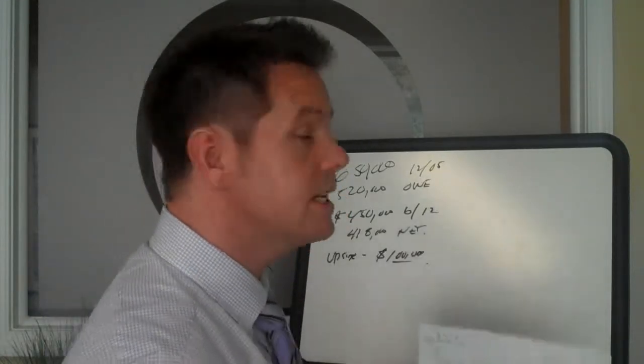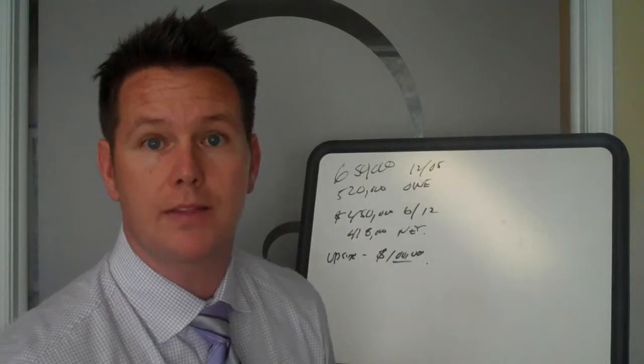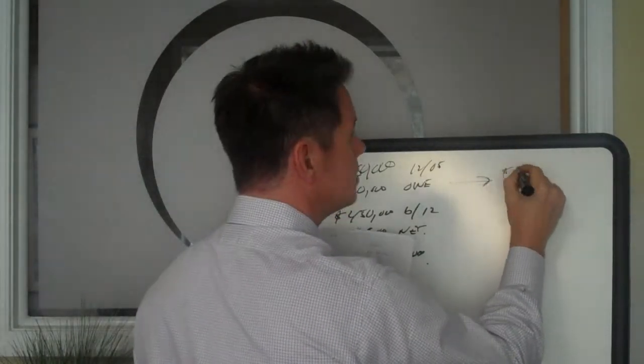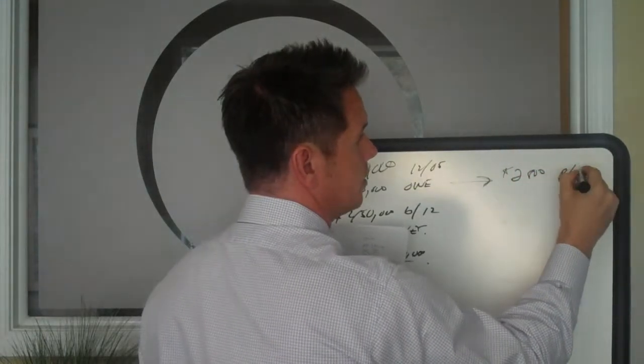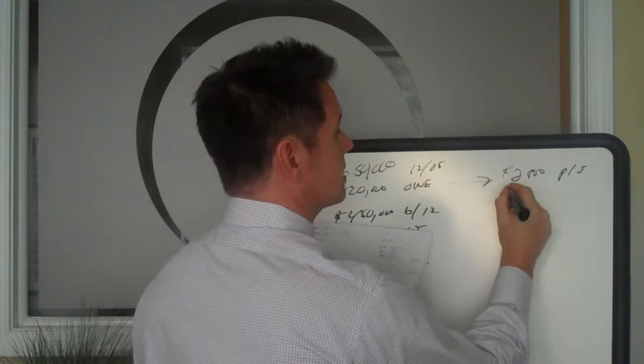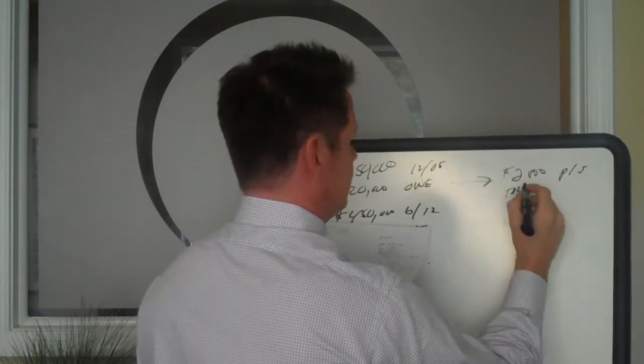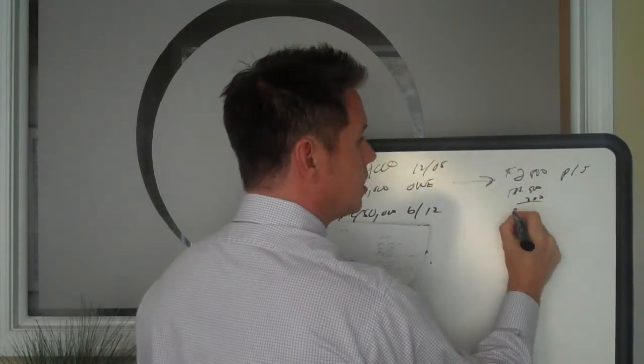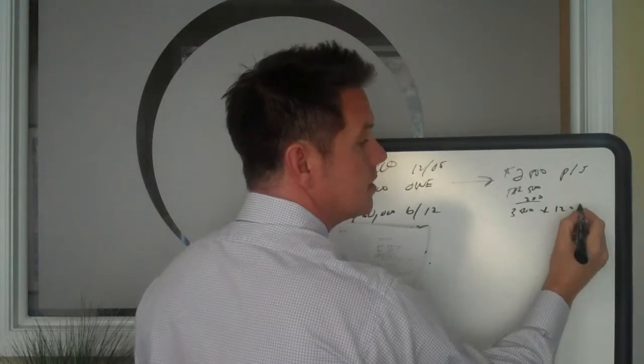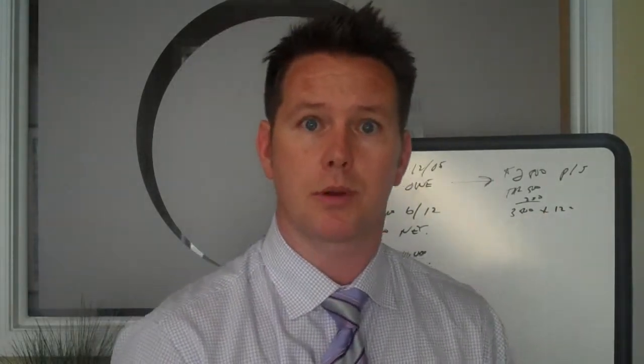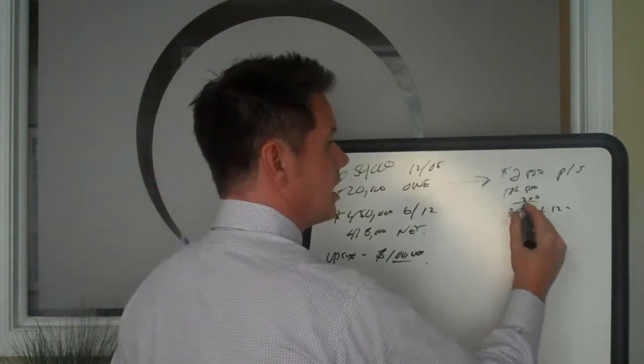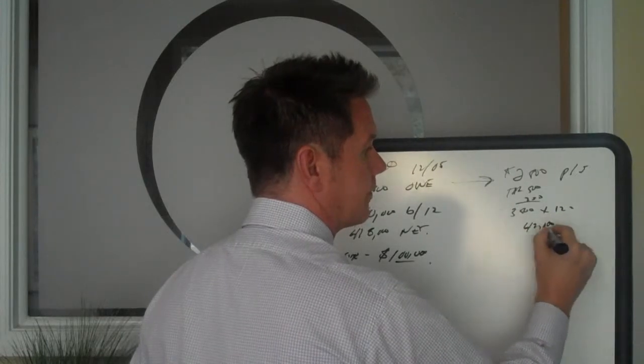So what's interesting about this is on the $520,000 that they owe, they've got a monthly payment right now of $2,800 for principal and interest. In addition to that, they've got their taxes, another $500 a month in taxes. They've got another $200 a month in insurance. So they've got a total of $3,500 a month in total payments. So principal, interest, taxes, insurance, $3,500 a month times 12 months. They've got $42,000 a year.